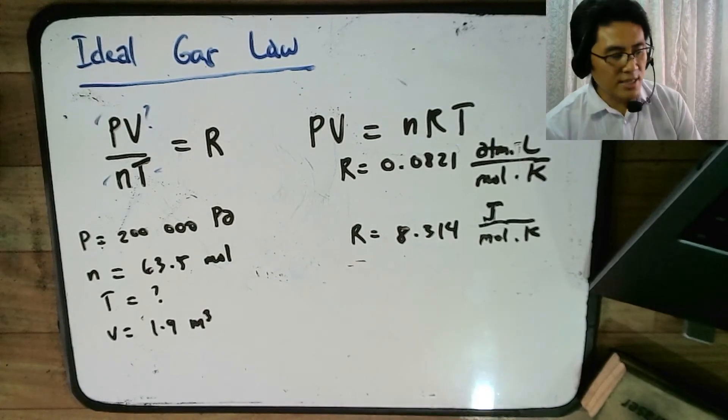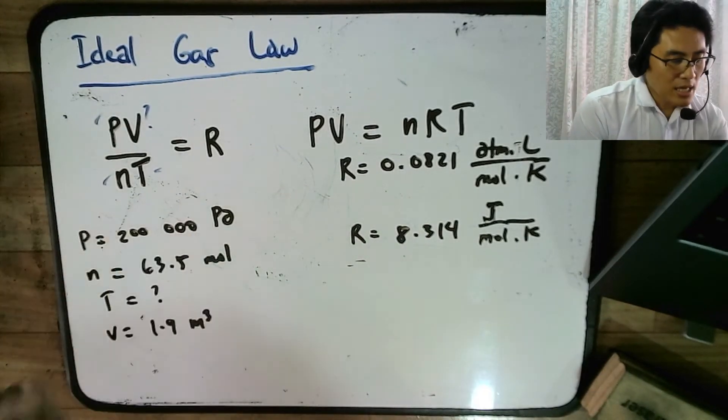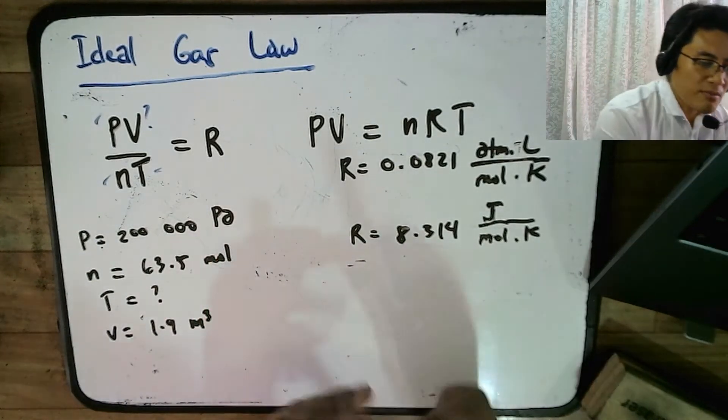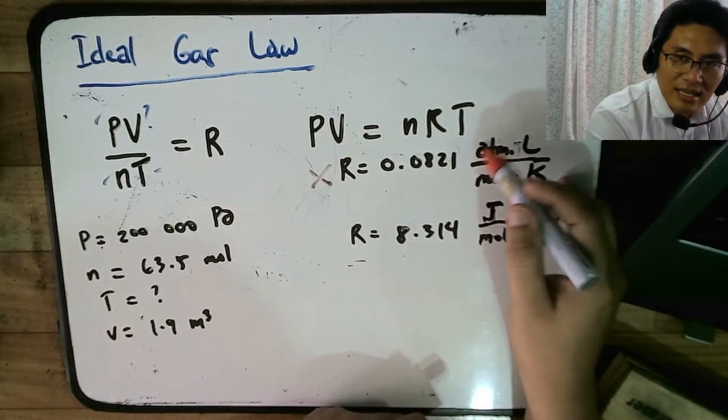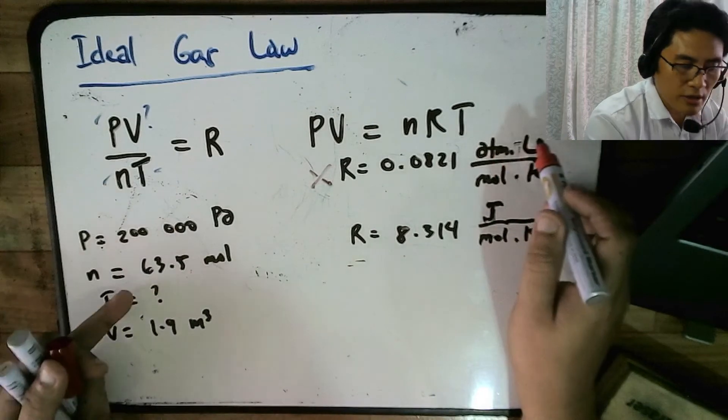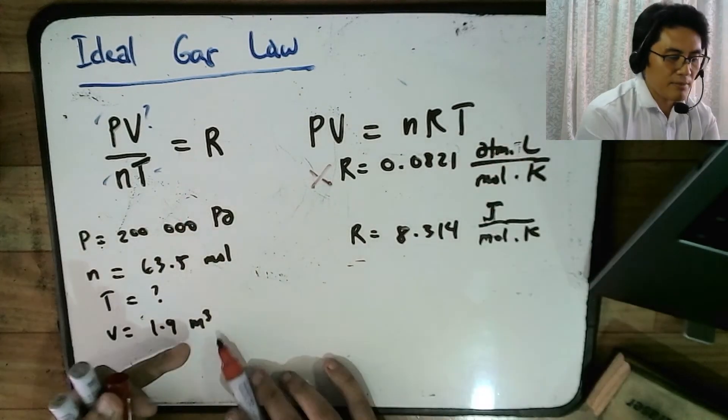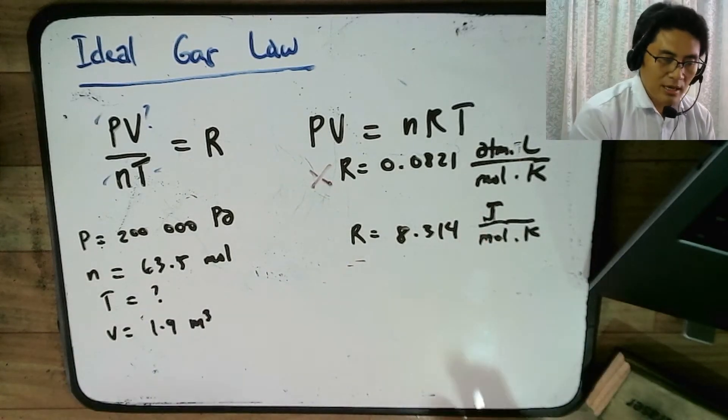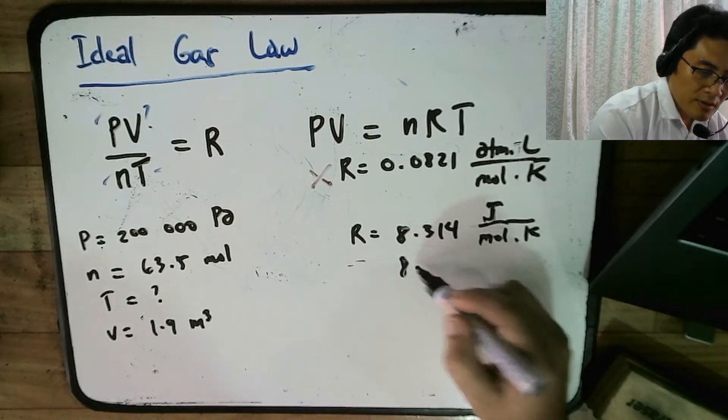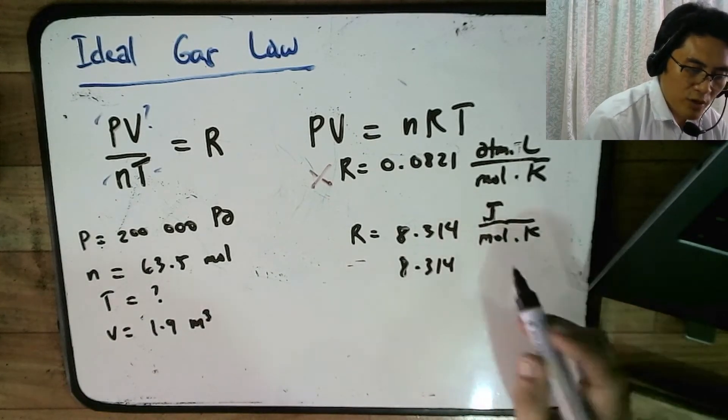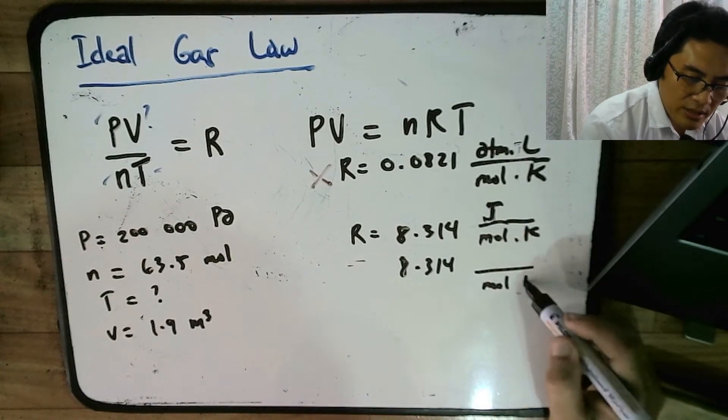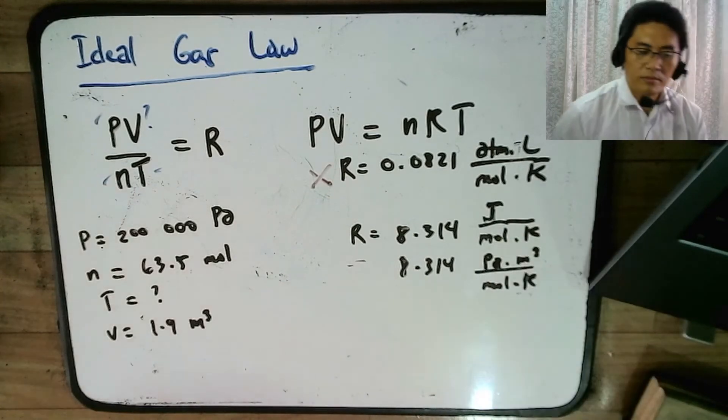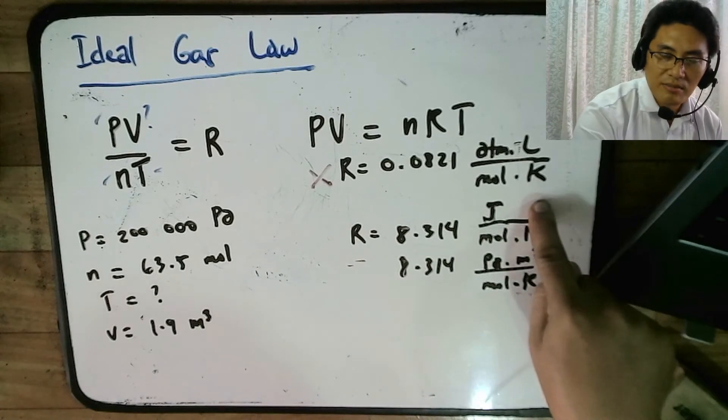So first of all, you'll realize that again, pressure is in Pascals, volume is in meter cube. So that means you cannot use this, because remember this uses ATM and liter. ATM for the pressure, liter for the volume. But since you are using Pascals and meter cube, you will be using this. So in other words, when we see it as 8.314 Joule per mole Kelvin, it's actually Pascals times meter cube. This is actually just means that.